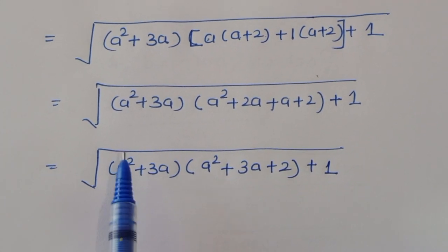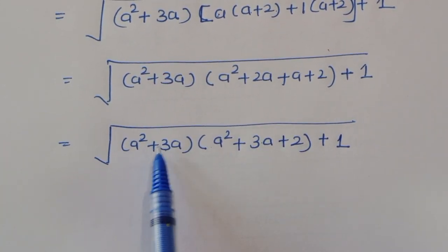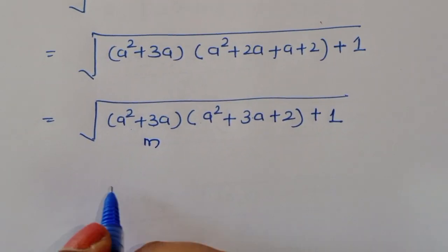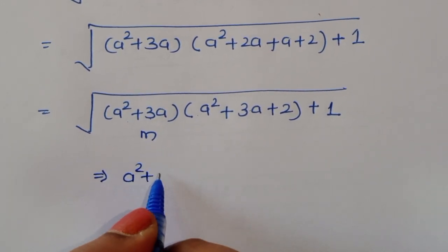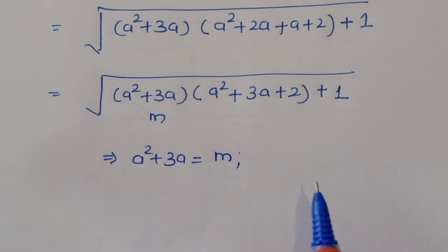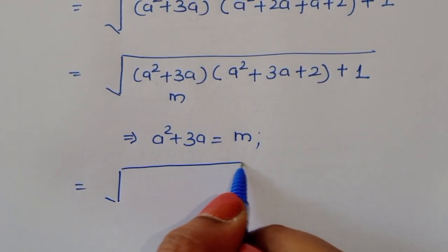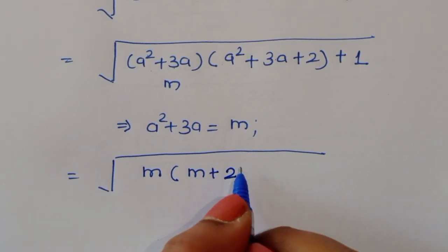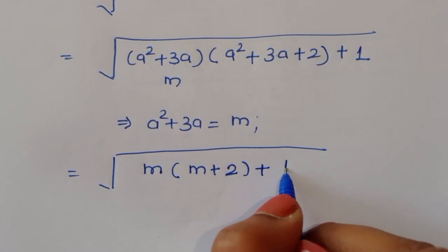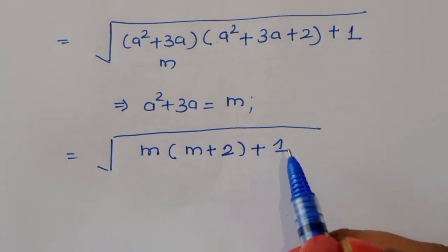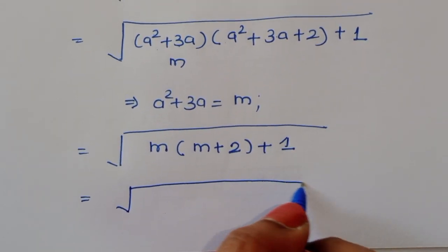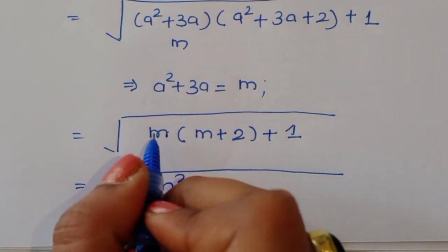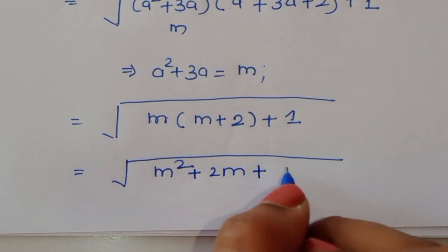You can see here that a squared plus 3a appears as a common term. So we introduce a variable m, letting m equal a squared plus 3a. The expression becomes m times (m plus 2) plus 1, which equals m squared plus 2m plus 1.